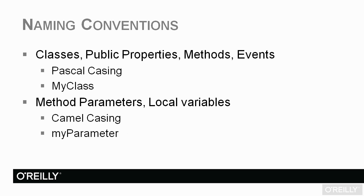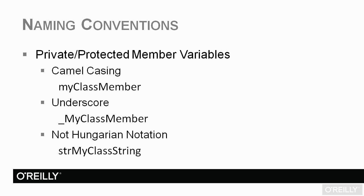Let's talk about naming conventions. .NET came out with a naming convention for classes, public properties, methods, and events called Pascal casing, which means the first letter is uppercased and then each first letter of each word in a variable name, class name, or property name is also capitalized. For method parameters and local variables, we use camel casing — the first letter is lowercase and then the first letter of each subsequent word is uppercased. So it's like Pascal casing except the first letter is lowercased. Now for private and protected member variables, the last two were pretty much .NET standards that everyone follows, but private and protected members has changed over time.